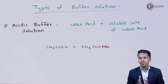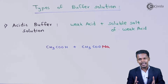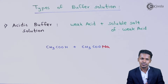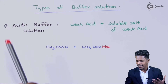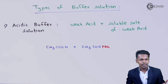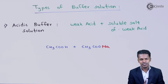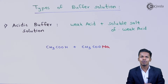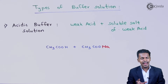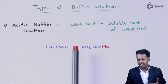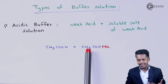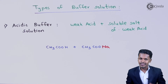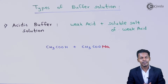In this case, the weak acid and its soluble salt together form an acidic buffer solution. To maintain an effective acidic buffer solution, both components should be present in equal proportions — the concentration should be the same. Even if we add a small amount of acid or base to this combination of acetic acid and sodium acetate, the pH won't change drastically.